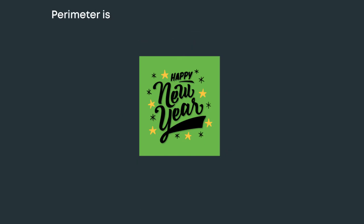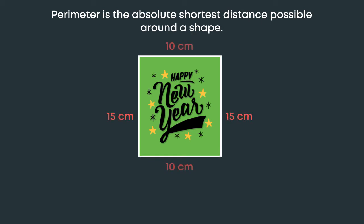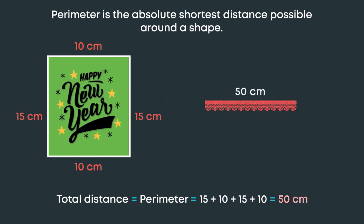Perimeter is the absolute shortest distance possible around a shape. Let's say the greeting card measures 15 cm by 10 cm. Then the total distance will be 15 plus 10 plus 15 plus 10, which will be equal to 50 cm. So, Rahul needs 50 cm of lace to put around his greeting card.